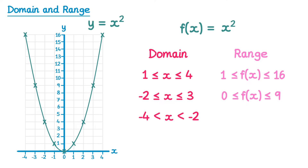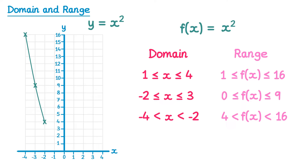And one more — this time we'll look at x in between negative 4 and negative 2. Highlighting those on the x axis, we only want this section of the graph. Looking at the y axis the corresponding range goes from 4 to 16, so f of x is in between 4 and 16. Notice this time I use less than symbols rather than less than or equal to symbols. This is due to the restriction on the domain: the largest output of 16 is obtained when x equals negative 4, but negative 4 is not actually included in the domain, so we can't get 16 out. Similarly, the lowest value of 4 can't be obtained because you can't actually put in negative 2, so instead we use less than symbols.